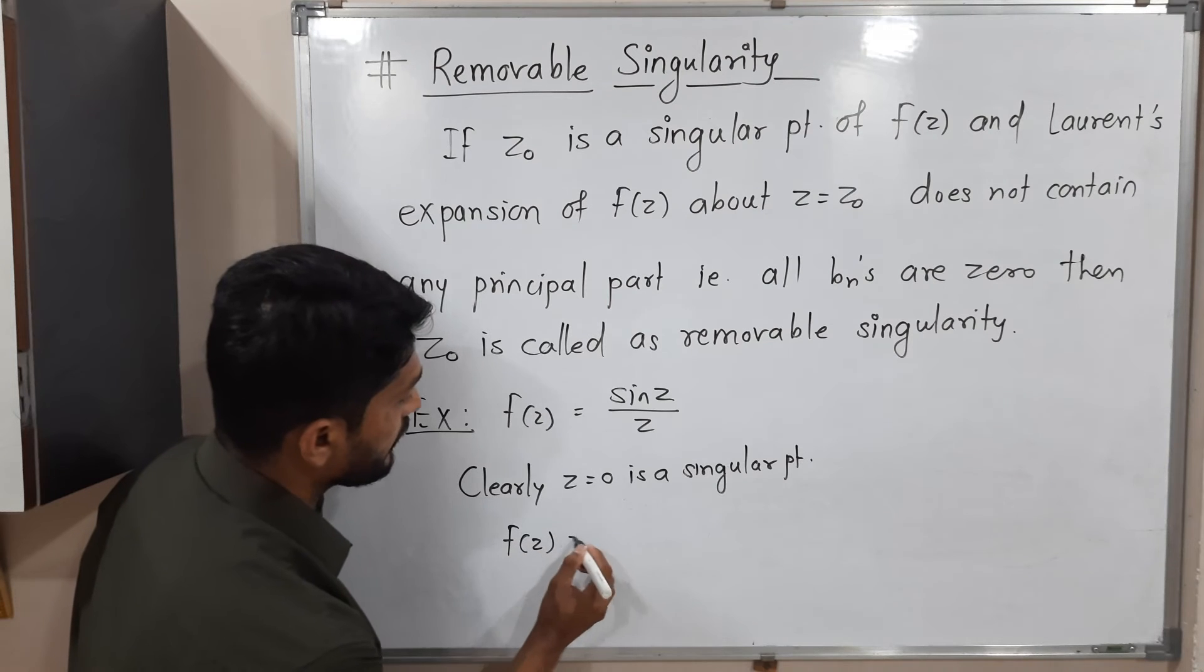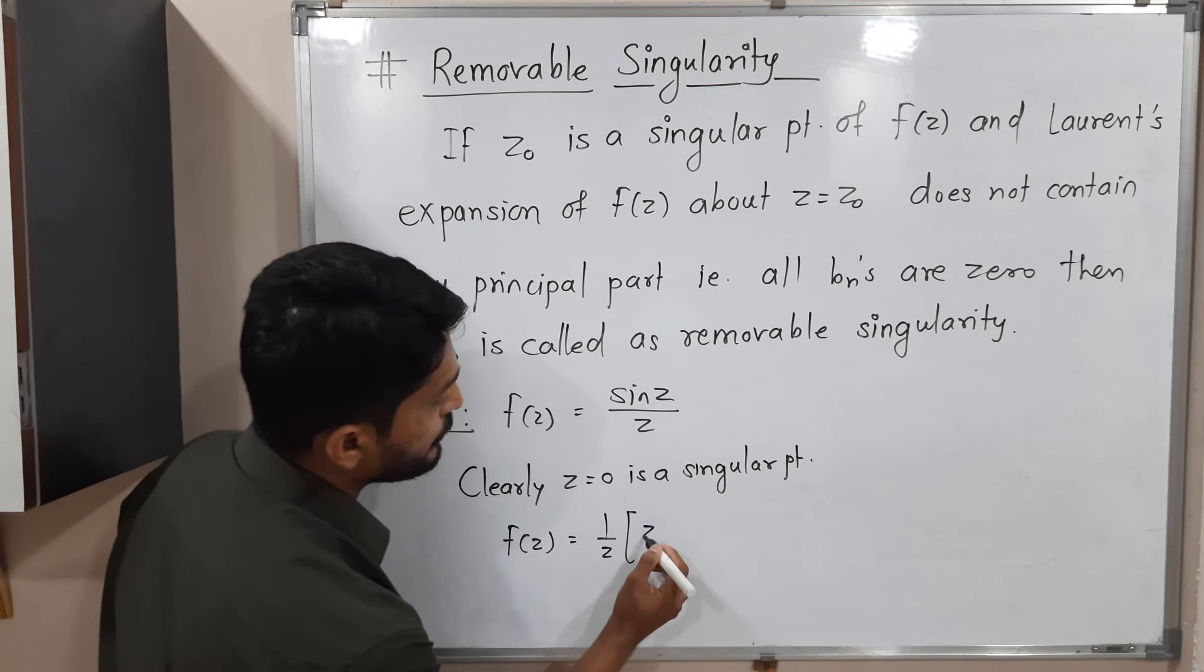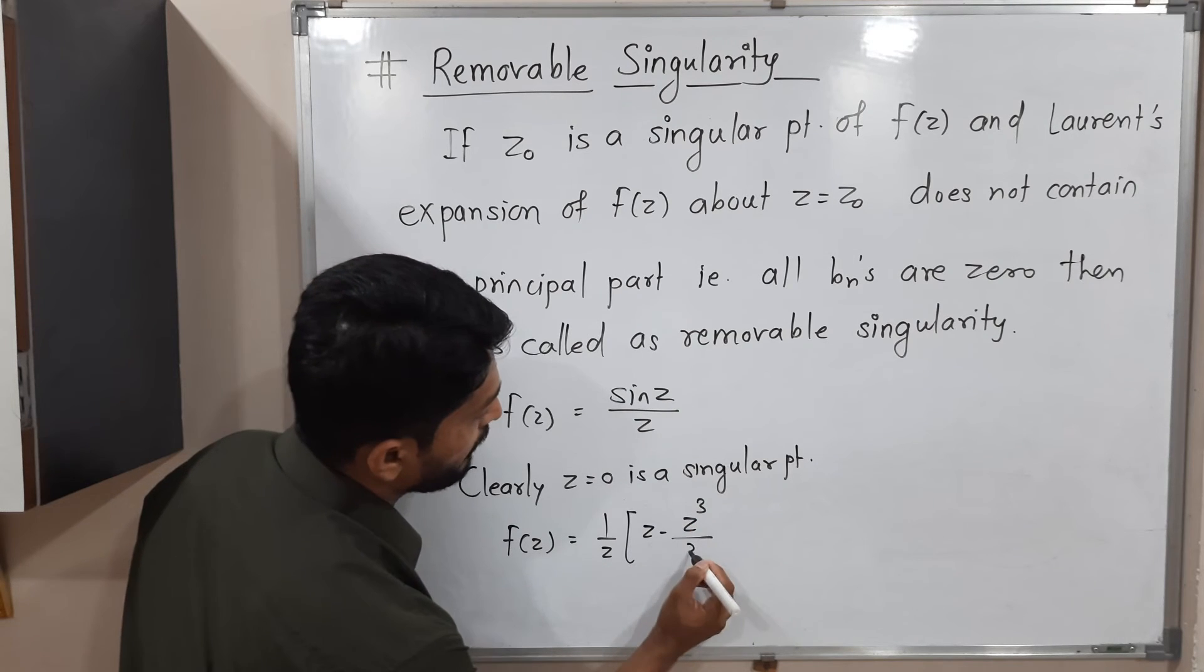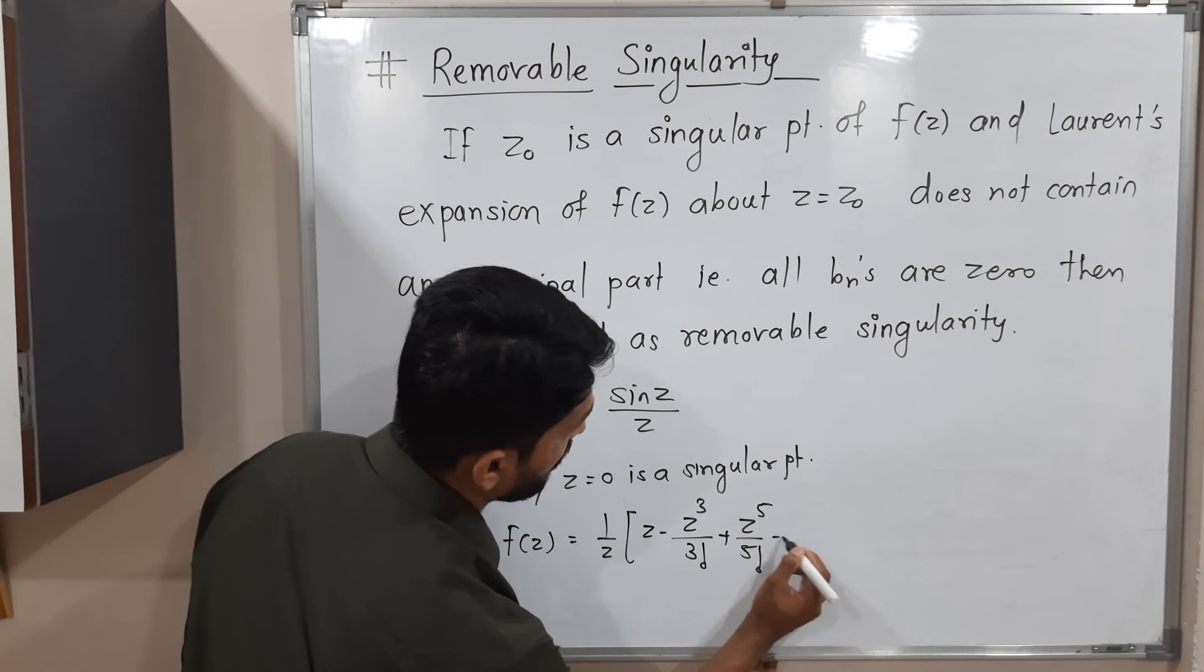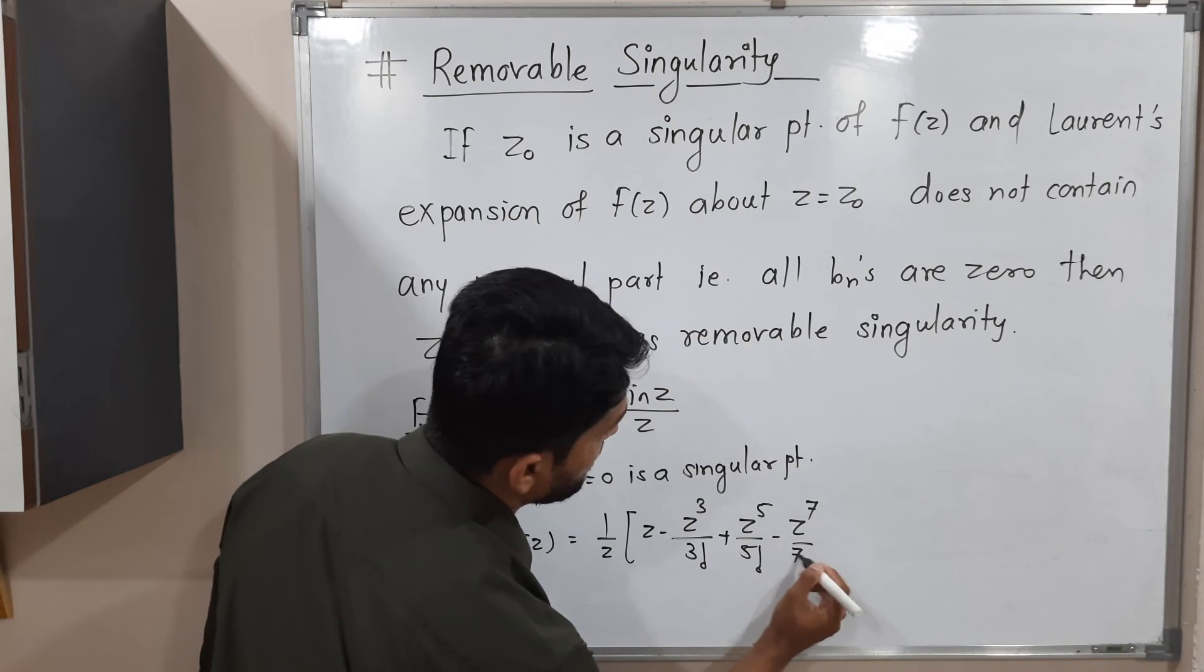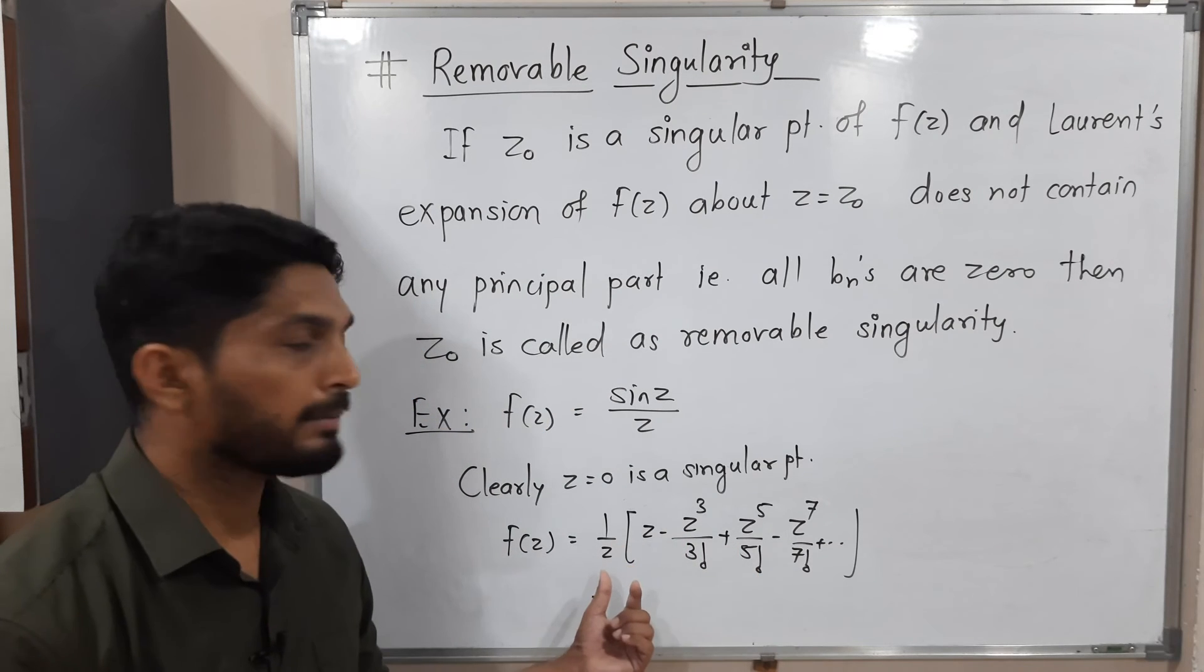f(z) equals 1/z. We know the series of sin(z), which is z - z^3/3! + z^5/5! - z^7/7! plus and so on. This is standard series of sin(z).